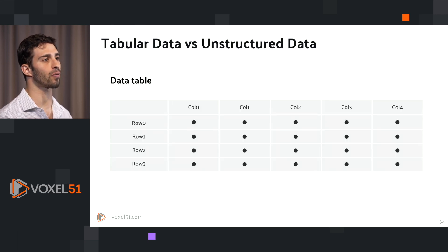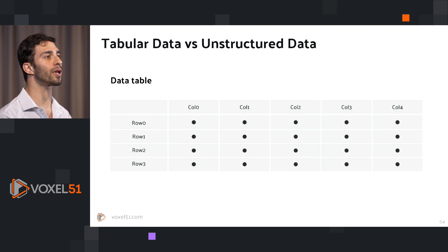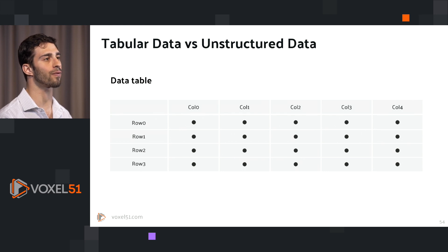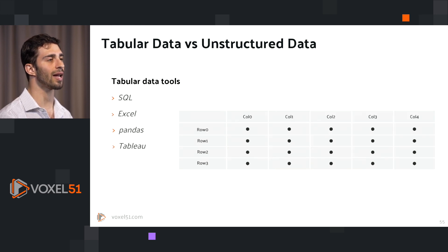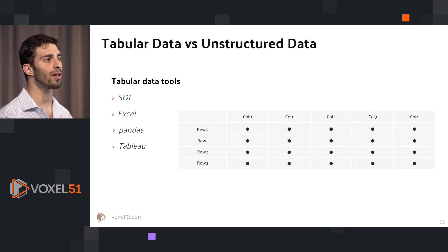I find it most helpful to start with looking at tabular data and understanding the difference between tabular and unstructured data. We're all familiar with data tables. They're very regular, very structured, and very efficient for many different purposes. They have rows and columns and cells that correspond to a specific row-column pair. Data tables are so prevalent and pervasive that there's a slew of tools that allow you to work with them, from SQL to Excel, Pandas, Polars, and Tableau.